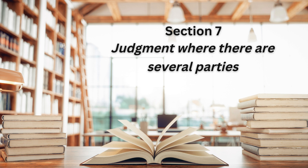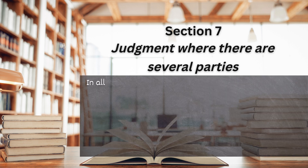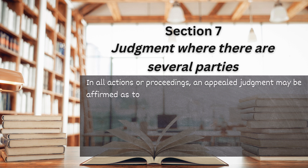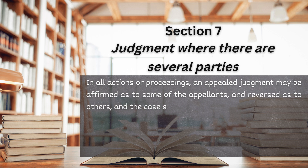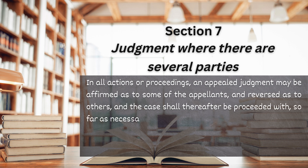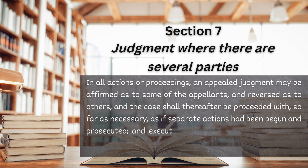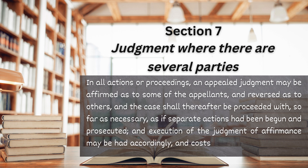Section 7. Judgment where there are several parties. In all actions or proceedings, an appealed judgment may be affirmed as to some of the appellants and reversed as to others, and the case shall thereafter be proceeded with, so far as necessary, as if separate actions had been begun and prosecuted. An execution of the judgment of affirmance may be had accordingly, and costs may be adjudged in such cases as the court shall deem proper.